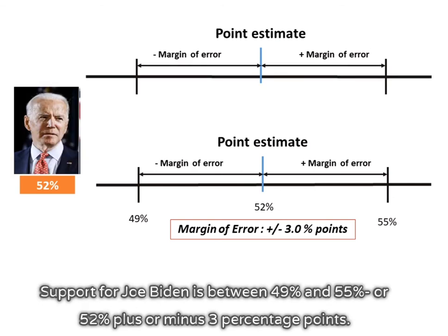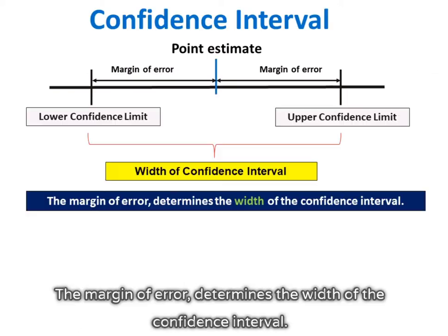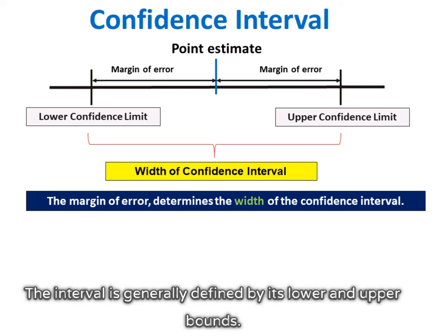Support for Joe Biden is between 49% and 55%, or 52% plus or minus 3 percentage points. The margin of error determines the width of the confidence interval. The interval is generally defined by its lower and upper bounds.